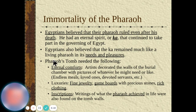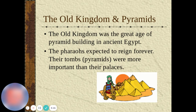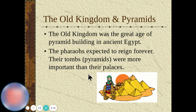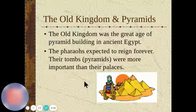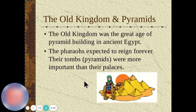The Old Kingdom was a great age of pyramid building in ancient Egypt. The pharaohs expected to reign forever, so their tombs — the pyramids — were more important than their palaces. A lot of Egyptians spent their time building pyramids because they wanted to have a good afterlife, similar to the Chinese ruler who built a giant monument for the same reason.